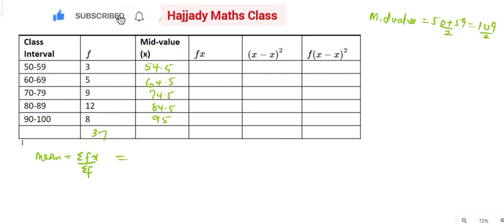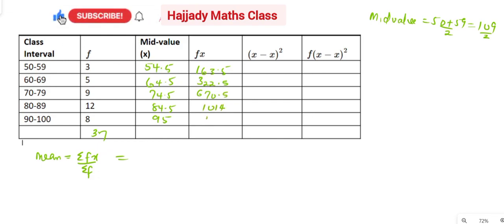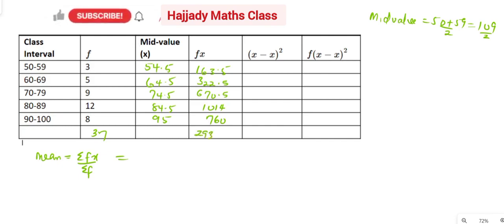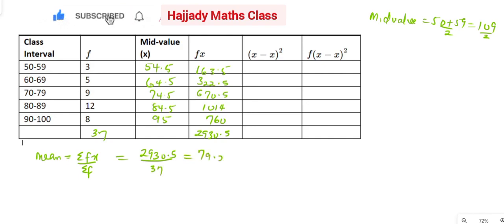Now we need fx — that is frequency multiplied by x. Using your calculator: 3 times 54.5 gives 163.5; 5 times 64.5 gives 322.5; then 670.5; then 1014; and lastly 760. Adding everything together, the sum of fx is 2930.5. So the mean is 2930.5 over 37, which gives us 79.2.